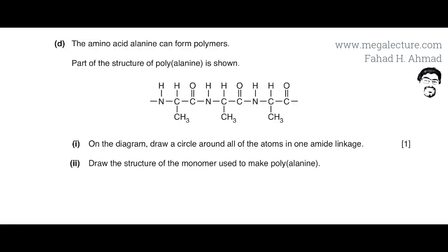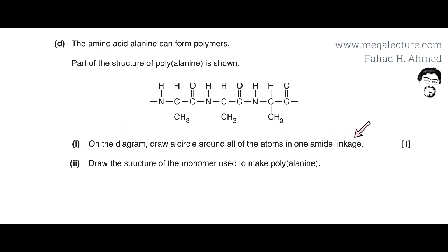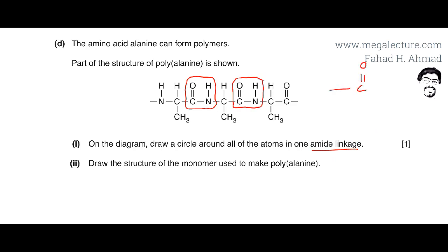Part D states that the amino acid alanine can form polymers, and shows part of the structure of polyalanine. We need to draw a circle around all the atoms in one amide linkage. An amide linkage consists of a C double bond O (carbonyl) followed by an N bonded to one H. These amide linkages are visible at two positions in the structure shown, and we circle those atoms.